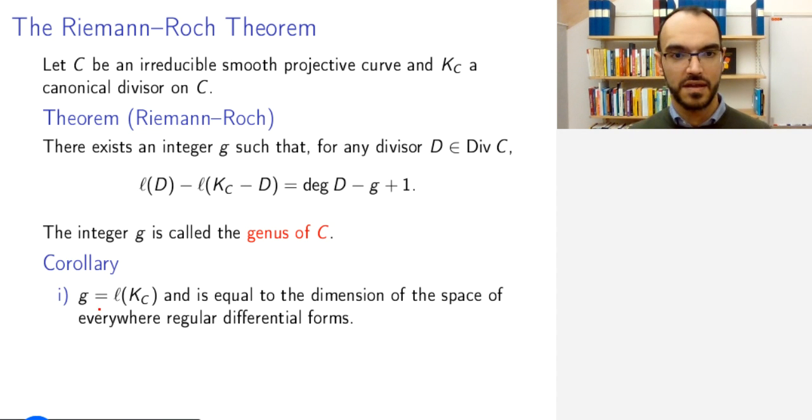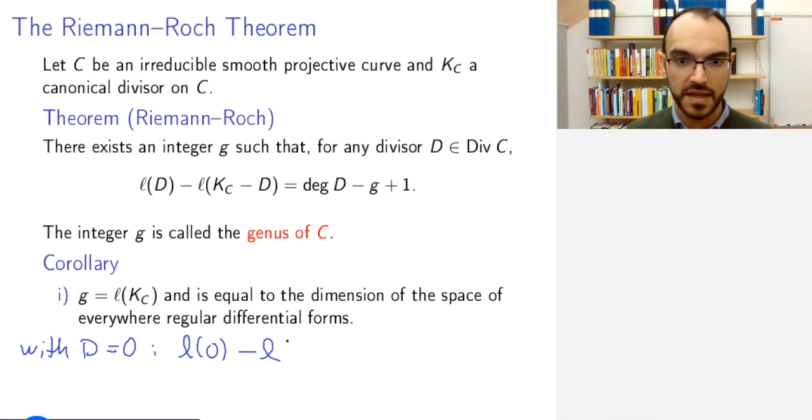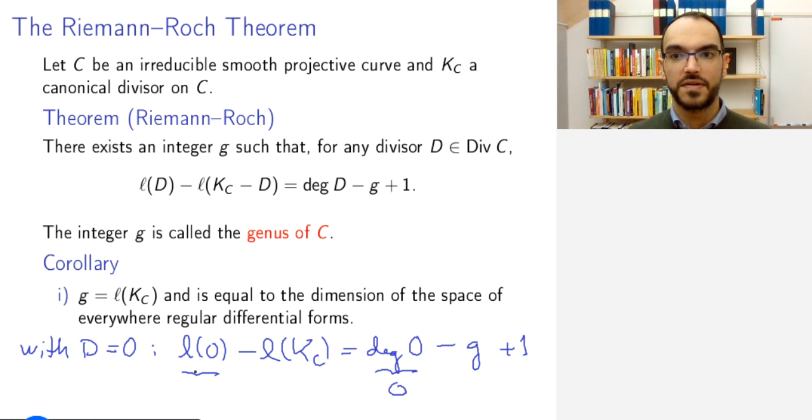So, let us look at a few consequences of this. First, g is equal to ℓ(K_C). The rest of the statement, let's prove this part, assuming the theorem. So, in the theorem, we just postulated the existence of g. And so, if I now apply the theorem to the divisor that is 0, the neutral element of the divisor group, then I get ℓ(0) - ℓ(K_C) equals the degree of 0 minus g plus 1. But the degree of 0 is 0 by definition. The dimension of the space of regular functions, which this is, these are just the constant functions. So, this is 1. And so, puzzling this together, I get that g is equal to ℓ(K_C).